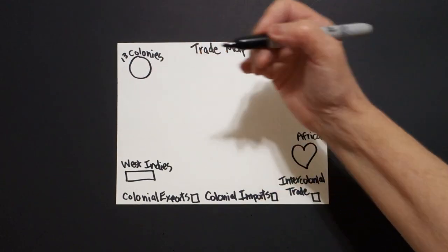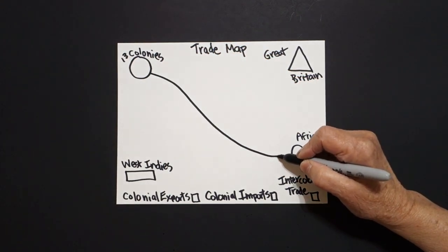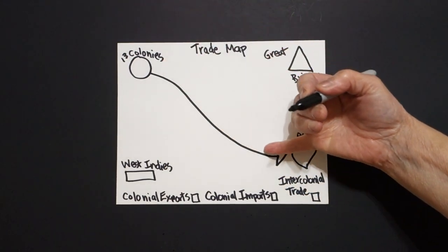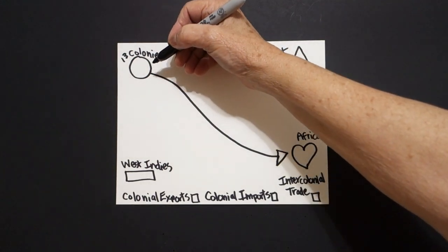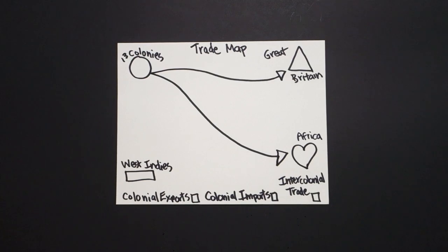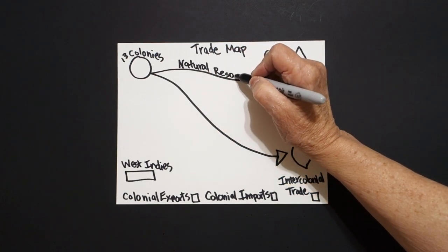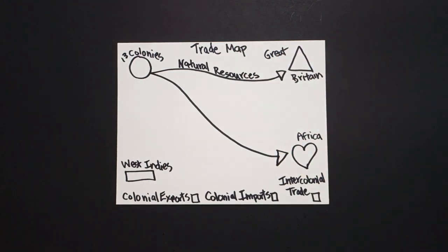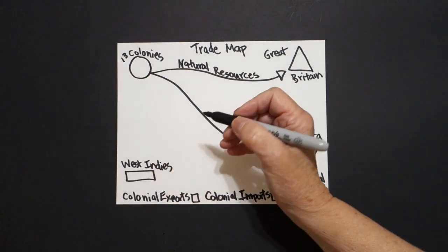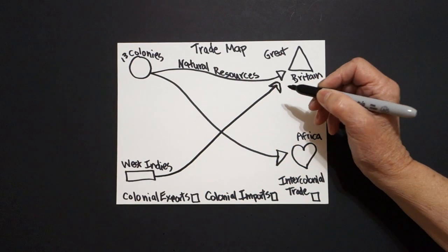If you were in the 13 colonies, you would take a slightly curved line ending with a triangle — you would send exports to Africa. Starting at the 13 colonies again, you would send exports to Great Britain, and these would mainly be natural resources: lumber, fur, fish, tobacco, indigo. Then, if you're over here on the West Indies, these people would export going towards Great Britain, and they would be exporting sugar, molasses, and fruit.